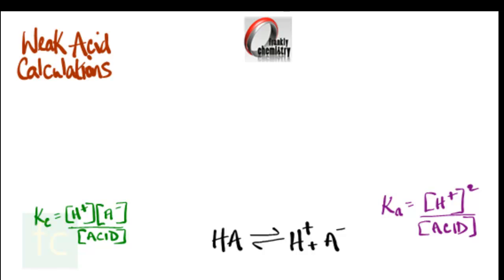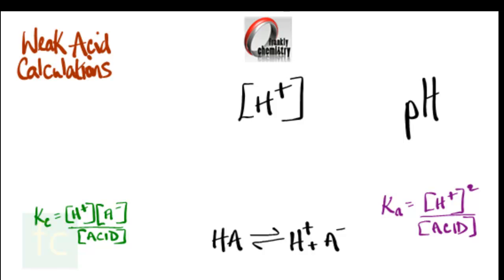Being a weak acid, it dissociates only very slightly, so the concentration of the acid after dissociation is taken to be simply the concentration of the acid at the start. Let me now build a flow diagram to show how the concentration of hydrogen ions in the acid solution is related first to the pH and then to the Ka value, the acid dissociation constant.